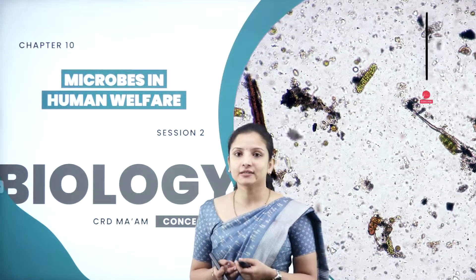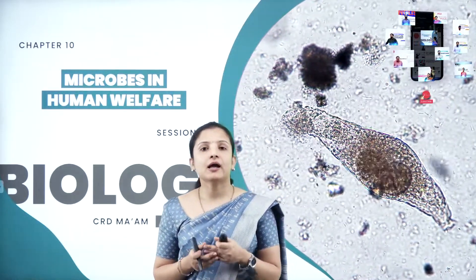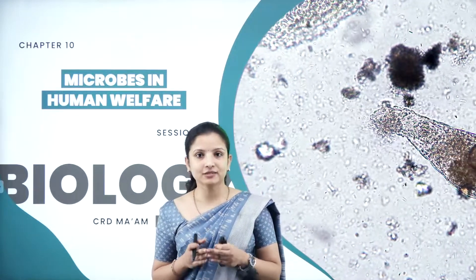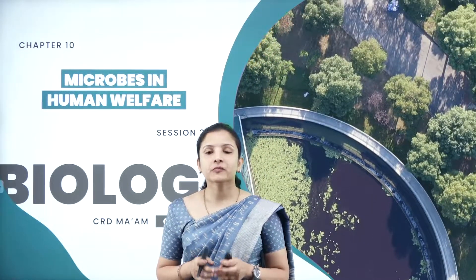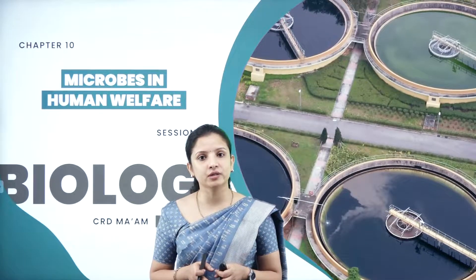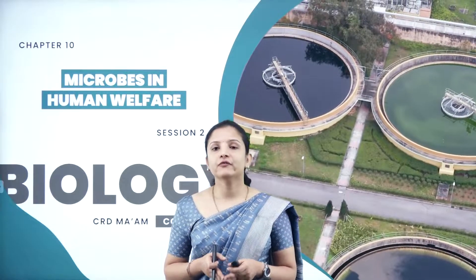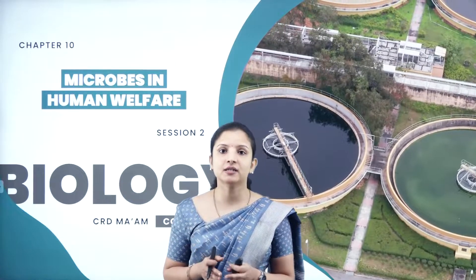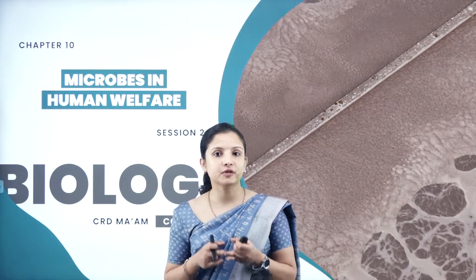In the previous session of this chapter, we discussed about the different types of microbes — fungi, bacteria and viruses. We also talked about how microbes are used in household products, wherein we discussed how lactic acid bacteria, that is Lactobacillus, helps in the formation of curd, and how Saccharomyces cerevisiae, which is baker's yeast or brewer's yeast, is used in the alcohol industry and in fermenting various bakery products. We also discussed how antibiotics and alcoholic beverages are prepared on a larger scale in the industry.